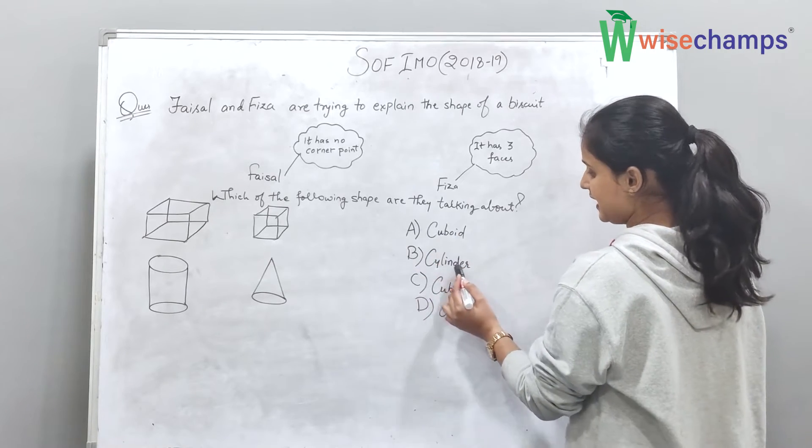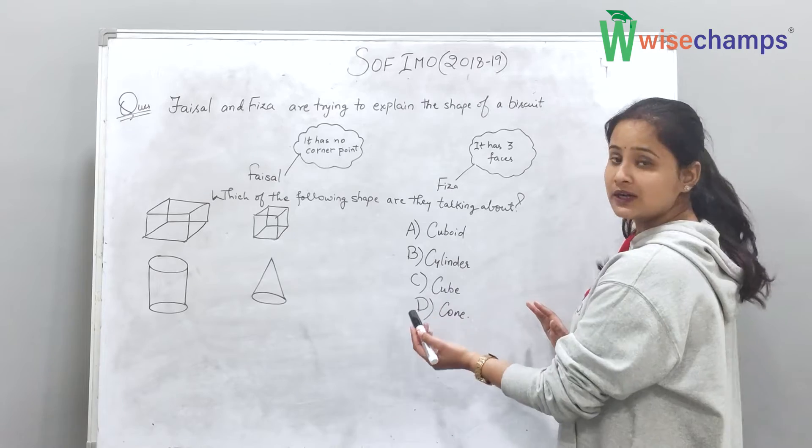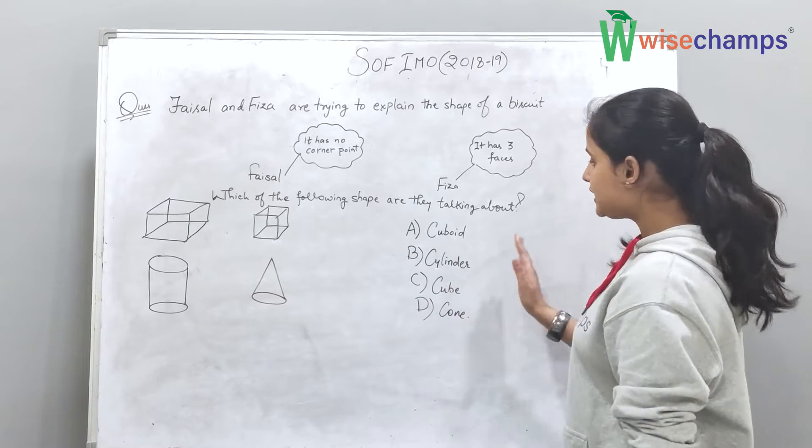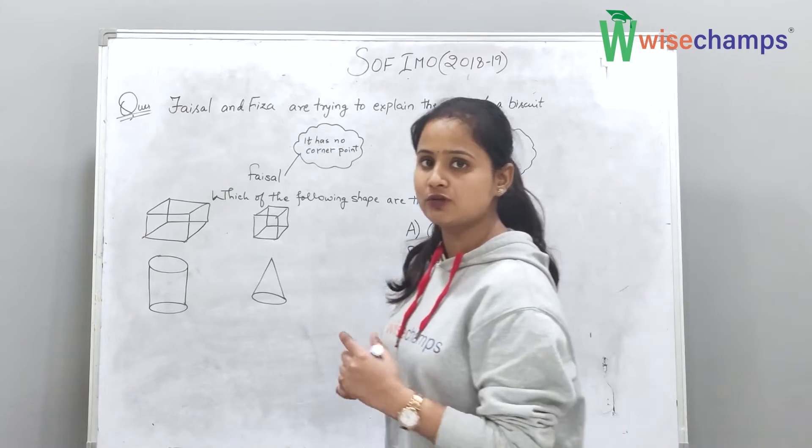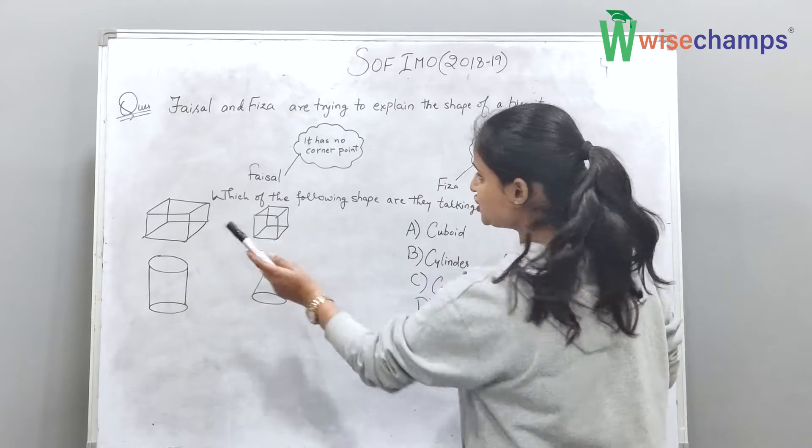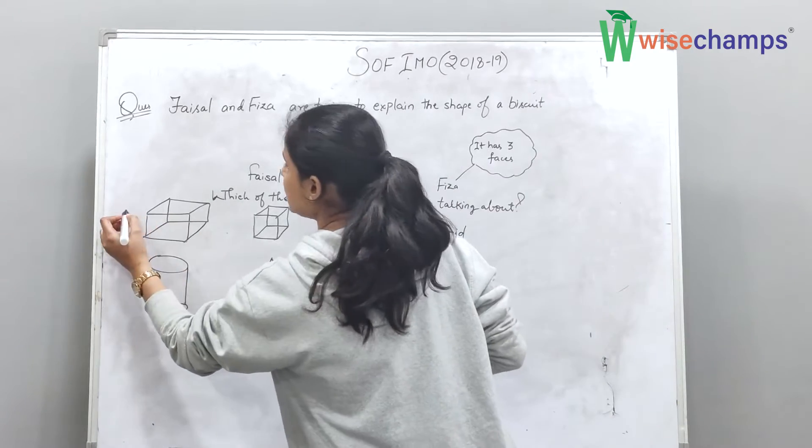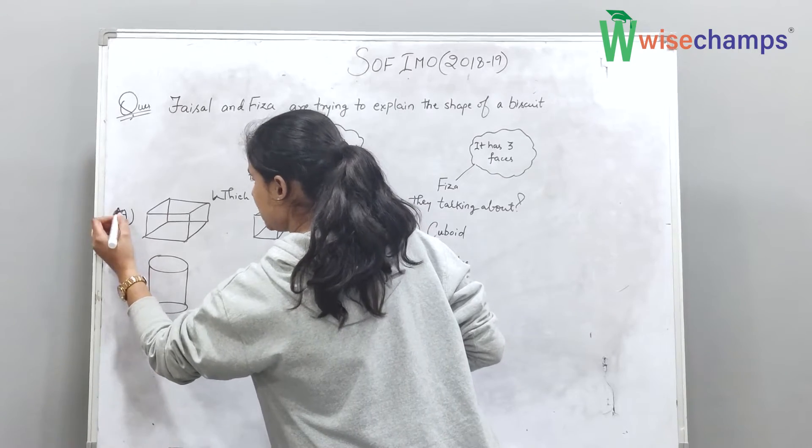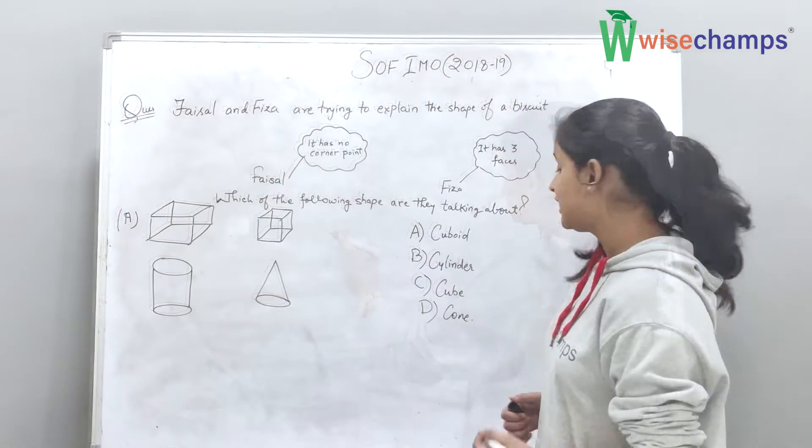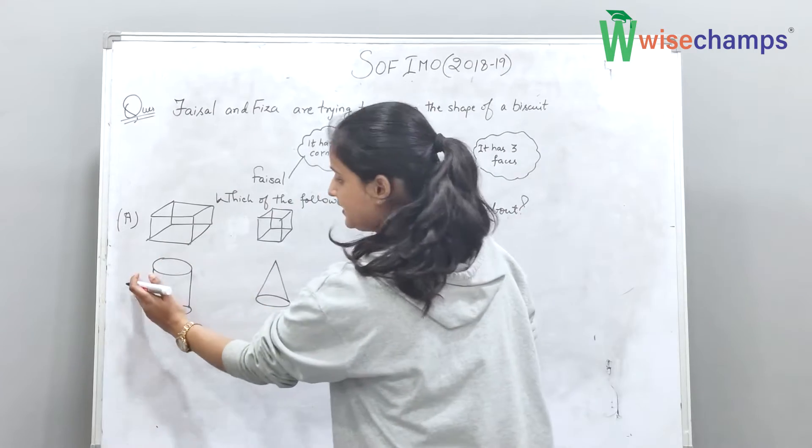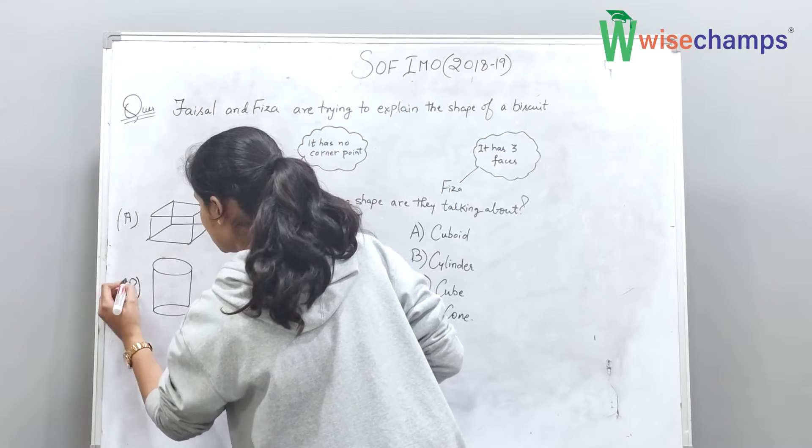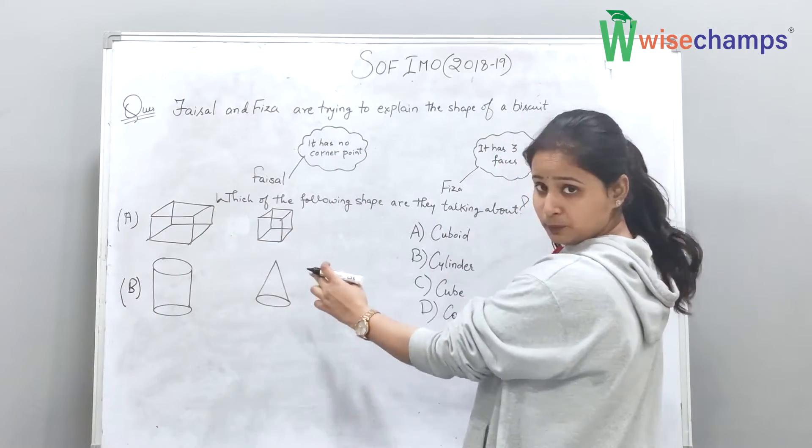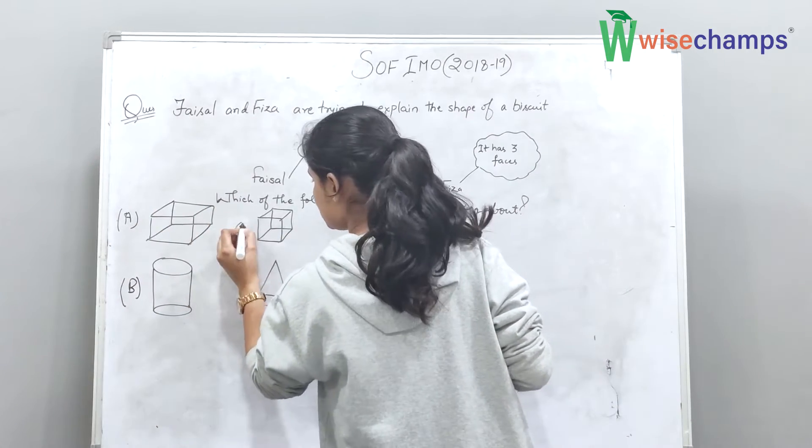A. Cuboid, B. Cylinder, C. Cube, D. Cone. So firstly we will see what the cuboid shape looks like. Just like here we have the shape drawn, this is the cuboid shape, A option shape. B, this is the cylinder shape, that means the second option. This is our cube shape, that means C option.